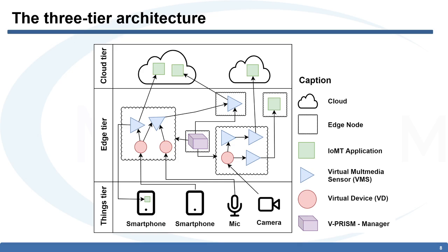Now we are going to talk about our architecture, whose name is vPrism. It is a three-layer architecture. On the things tier, we have the physical things — in this case, cameras and microphones — which produce the multimedia stream that will be processed by our VMS. In our architecture, the VMS does not receive data directly from the device. We have an entity called virtual device, and it has a one-to-one relationship with the physical thing.